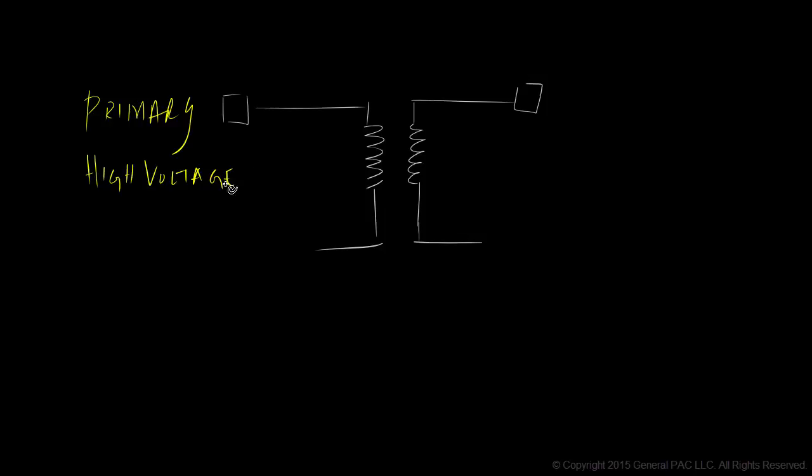Let's begin by drawing a single phase transformer with two windings. We'll assume that the winding on the left is the primary side, or the high voltage side, or the source side. And we'll assume that the winding on the right is the secondary side, or the low voltage side, or the load side. We'll indicate polarity side of the windings by nice round dots. And lastly, we'll draw two parallel lines in the middle to illustrate magnetic coupling.